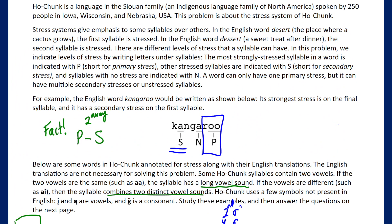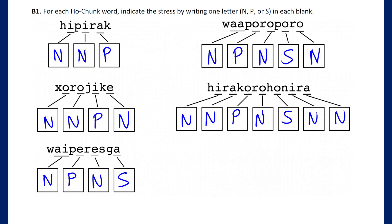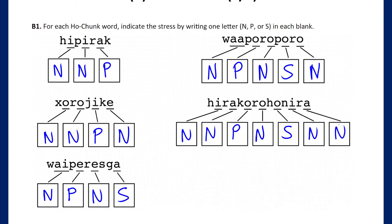According to the instructions, other stressed syllables are indicated with S for secondary, and unstressed syllables with N. You can only have one primary stress, but there can be multiple secondary stresses. So this is likely the correct answer — if there were a variation, we might also have secondary stress on the final vowel. This is a general strategy for solving anything to do with tones or stress, because normally stress alternates.